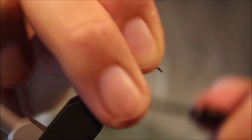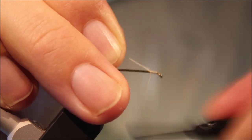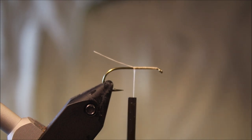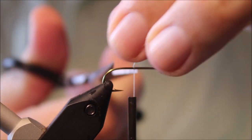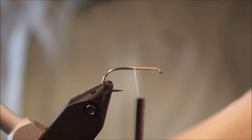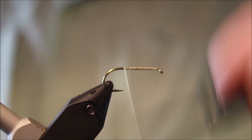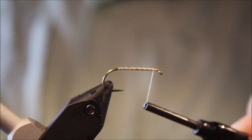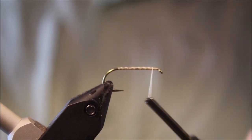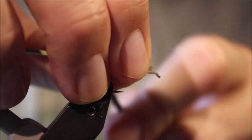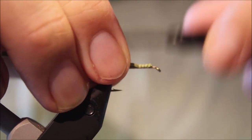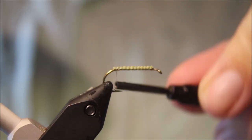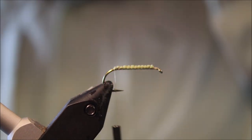So I've got my hook in my vise. This is just Danville's six solid tan thread. I'm going to tie down just a small scrap of foam, any old cutting of foam you've got will do. I'm going to stop right at the start of the bend.